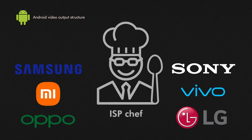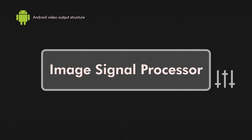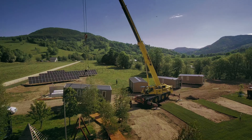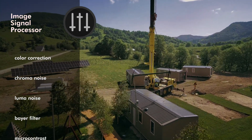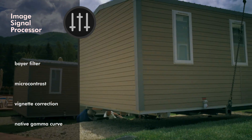The brands set the ISP, and they decide the taste. Same as Camera2 API, this layer cannot be modified by the user or video apps. ISP holds a wide list of signal processing options, more than you can find on your favorite RAW photo program.